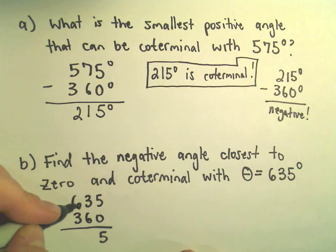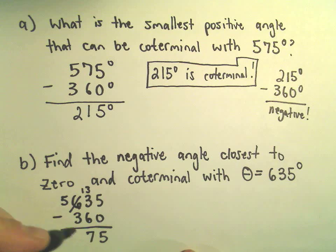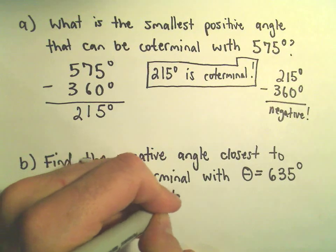well, 5 minus 0 is 5. Let's see, we can take one away, so 13 minus 6 is 7, 5 minus 3 is 2, so we have 275 degrees.